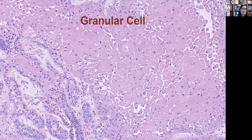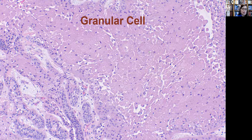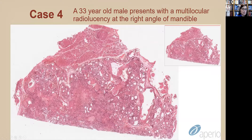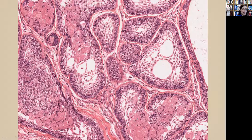The different histologic variants of ameloblastoma can often be seen in combination. One is the granular cell variant, which is from lysosomal aggregates. Here we see more conventional ameloblastoma with peripheral palisade, and then we see granular cell change. Case four is a 33-year-old male with a multilocular radiolucency in the right angle of the mandible. We see a follicular pattern with some cystic degeneration, and at higher power we see granular cell change — a mixed follicular and granular cell variant.